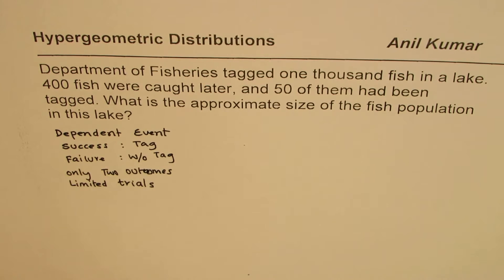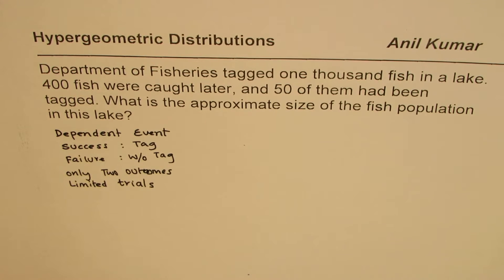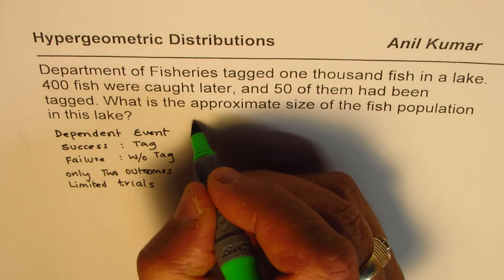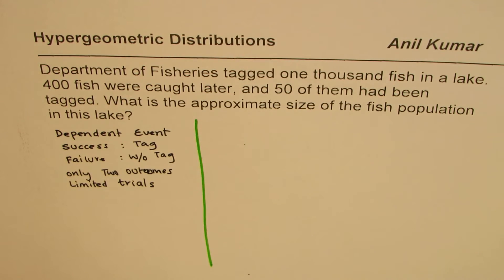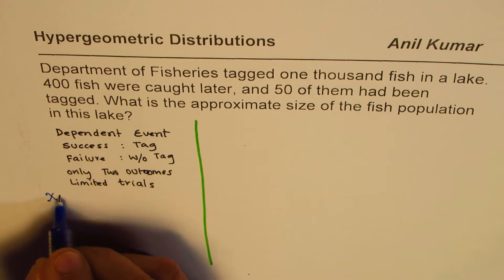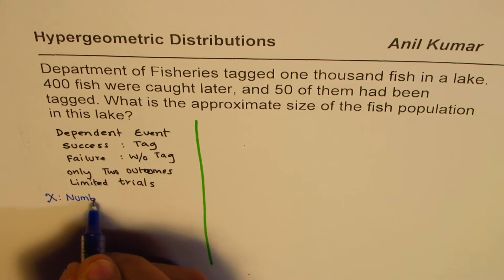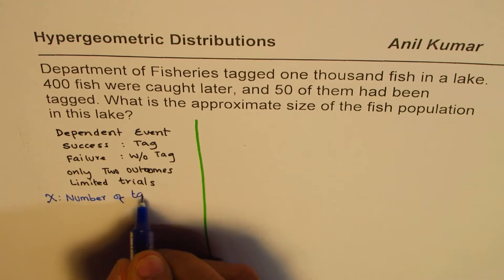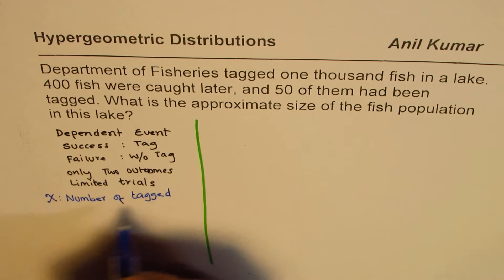And when you catch a fish, the population sample changes, so the probability changes. So these are all dependent events with two outcomes — success or failure. Now let us define our random variable. Let the random variable x be the number of tagged fish caught. So now we will see how to solve such a question, and we will first define our random variable.